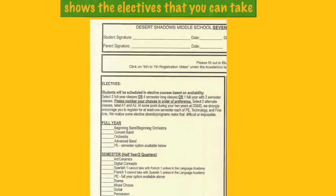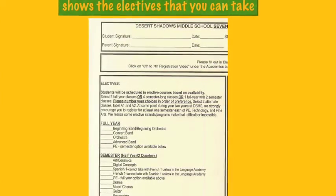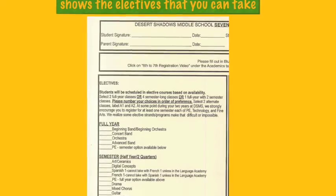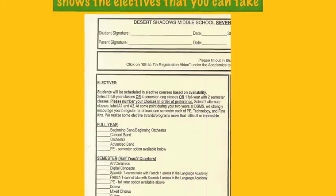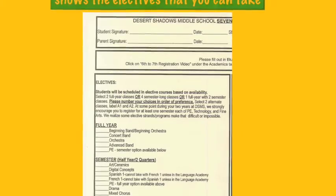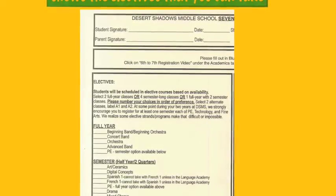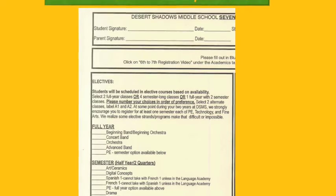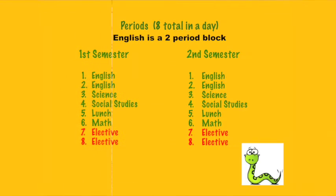Moving to the left-hand side of the card, we have the electives listed. This is a very important piece for you. Be sure to read it carefully and understand what you are choosing. You will find course descriptions for all of the elective classes on the back of your card.